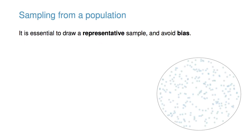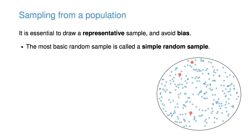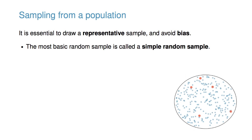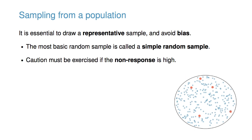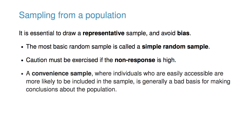It's essential to draw a representative sample and avoid bias. Random samples are preferable, and the most basic random sample is called a simple random sample. However, even random samples can be flawed. Caution must be exercised if non-response is high, because those who reply may not be representative of the entire population. In contrast, a convenience sample, where individuals who are easily accessible are more likely to be included, is generally a bad basis for making conclusions about the population.